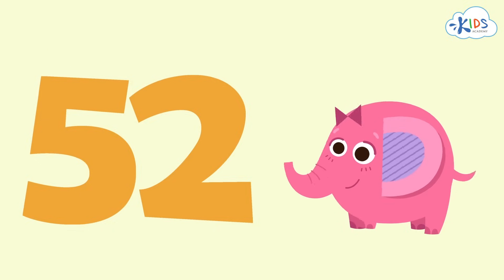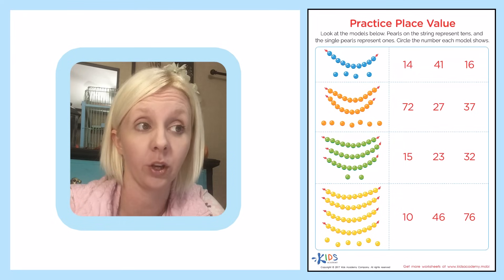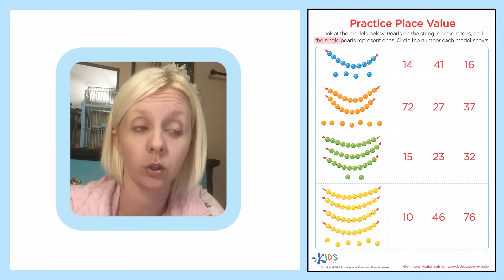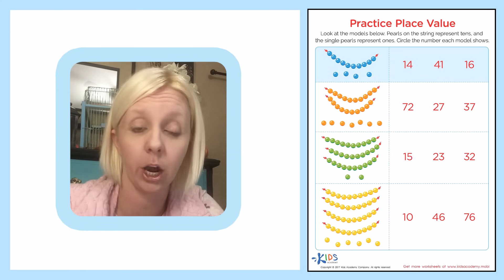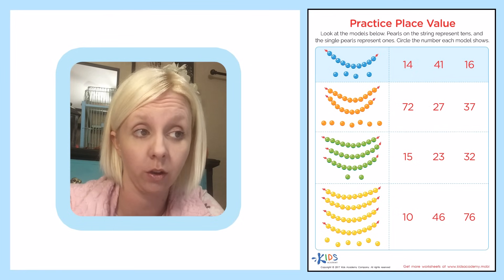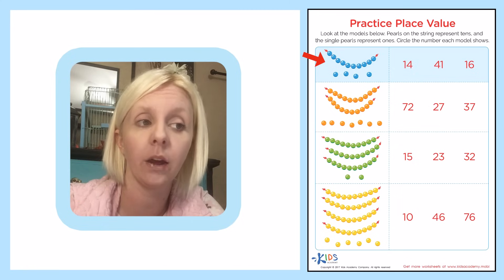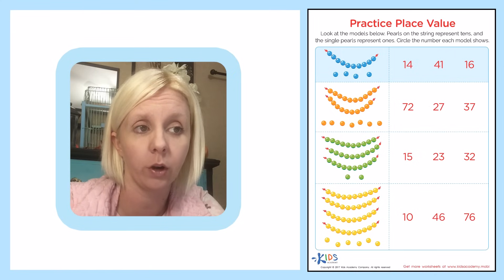Remember to look at the place the digit is in before you decide the value of that number. Thanks for watching, boys and girls. Now we have a practice worksheet on place value. The directions say: look at the models below — pearls on a string represent tens and single pearls represent ones; circle the number each model shows. One way to do it is to count by tens and ones: there's one string of ten, so count 10, then count up: 11, 12, 13, 14. The number is 14.